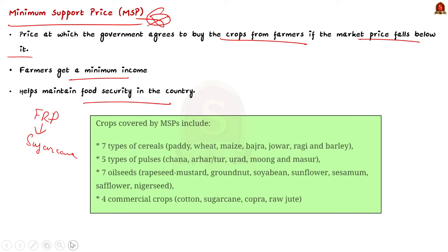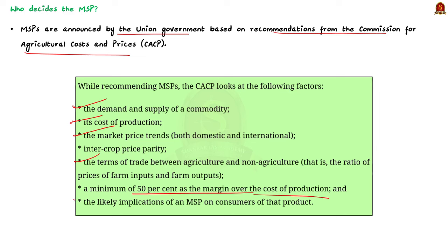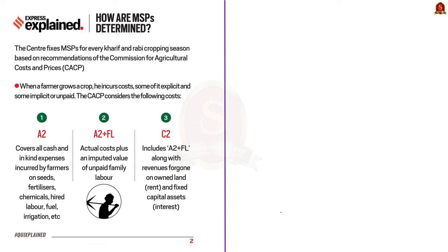MSPs are announced by the union government based on recommendations of the Commission for Agricultural Costs and Prices (CACP). CACP considers various factors: the demand and supply of a commodity, its cost of production, market price trends both domestic and international, intercrop price parity, terms of trade between agriculture and non-agricultural outputs, a minimum of 50% margin over cost of production, and the likely implications of MSP on consumers. When calculating cost for setting MSP, CACP considers three types of costs: A2 (paid-out costs including seeds, fertilizer, pesticides, and hired labor); A2 plus FL (adds the imputed value of family labor); and C2 (the highest, including A2+FL plus rental value of owned land and interest on fixed capital assets excluding land).